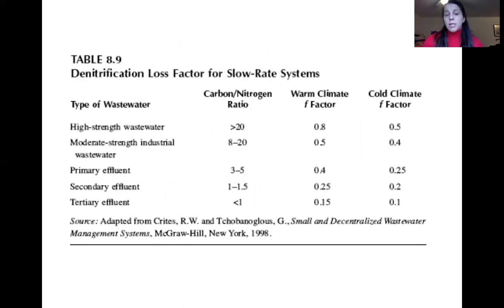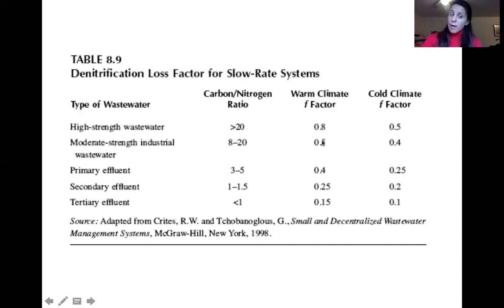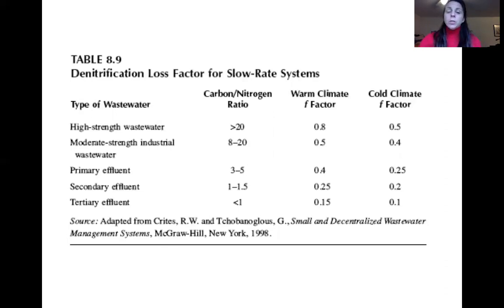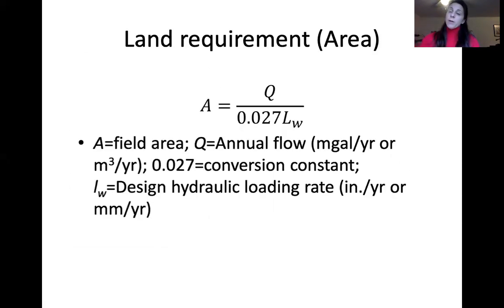Denitrification loss factors depend on the carbon-to-nitrogen ratio: lower ratio means lower denitrification loss. Warm climates yield higher factors than cold ones. Cleaner wastewater with lower carbon-to-nitrogen ratio produces less denitrification because heterotrophic denitrifying microorganisms need a carbon source. Land area required equals field area times flow rate, divided by the conversion constant 0.027, times the loading rate in inches per year.